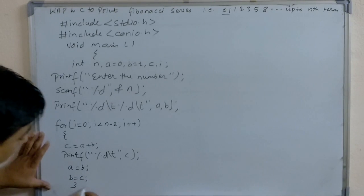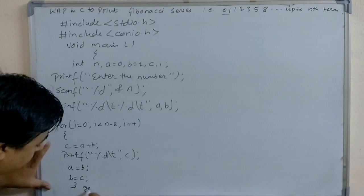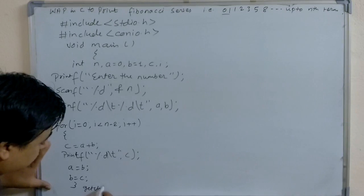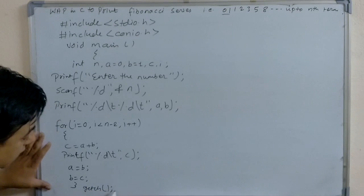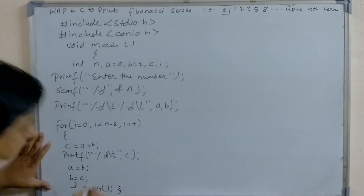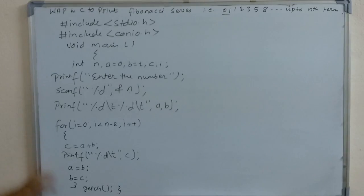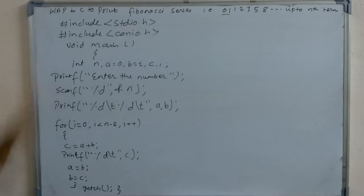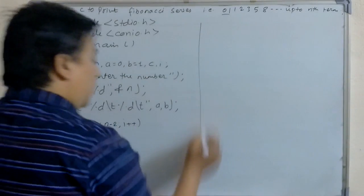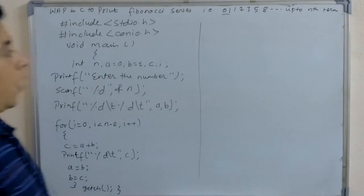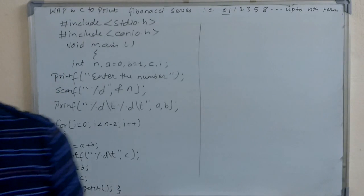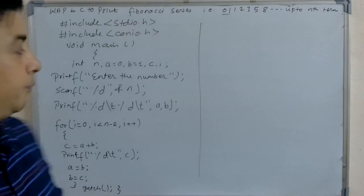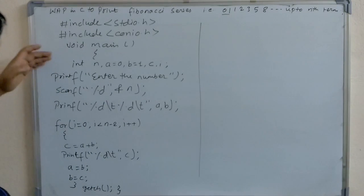After closing the loop, we write the getch function to hold the result on screen, and then close the main function. When you compile and run the program, you will see the output.